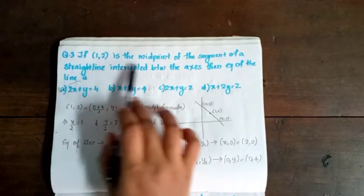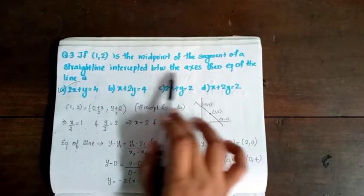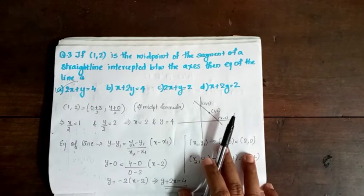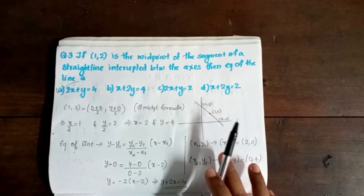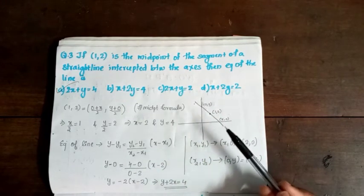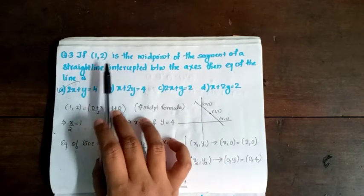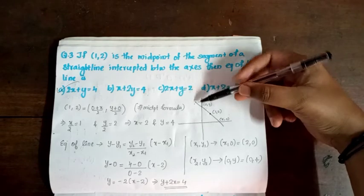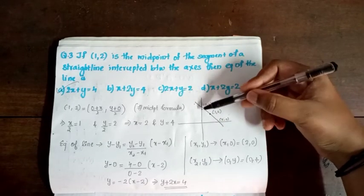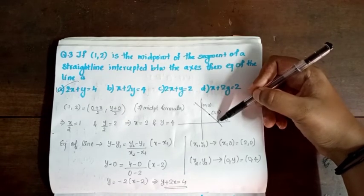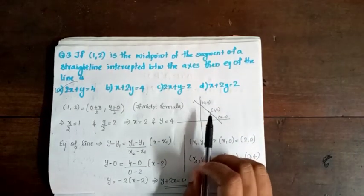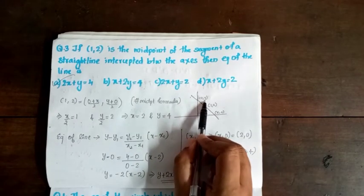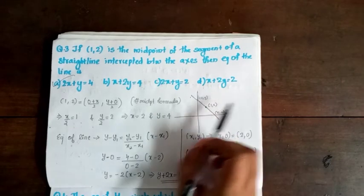Question 3: If (1, 2) is the midpoint of the segment of a straight line intercepted between the axes, find the equation of the line. The straight line touches both axes, and (1, 2) is the midpoint. We plot this and label the intercepts as (x, 0) and (0, y).